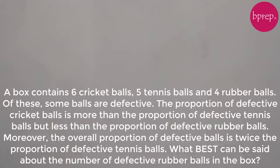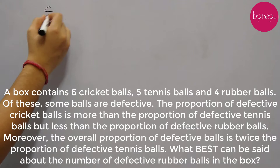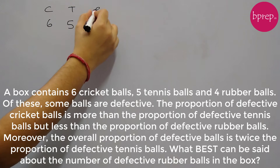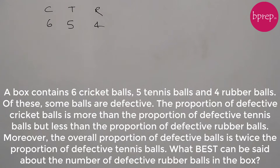A box contains 6 cricket balls, 5 tennis balls and 4 rubber balls. Of these, some balls are defective. The proportion of defective cricket balls is more than the proportion of defective tennis balls but less than the proportion of defective rubber balls.